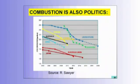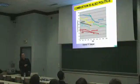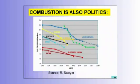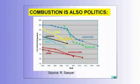Combustion is also politics. This chart shows the CO2 emissions per kilometer for a typical car over the years, and you can see that Japan and the European Union are pretty low. In France for example you are taxed if your car burns too much fuel. But in the United States the ratio is almost two times higher — so it's not a problem of technology, it's a problem of politics. You have to decide whether you want to drive a small car or a big car.